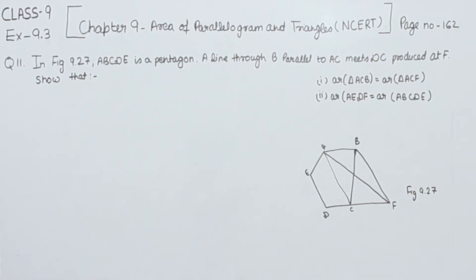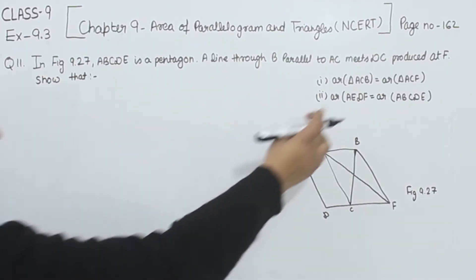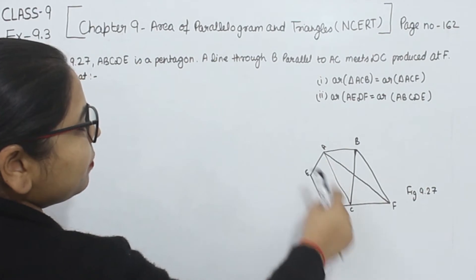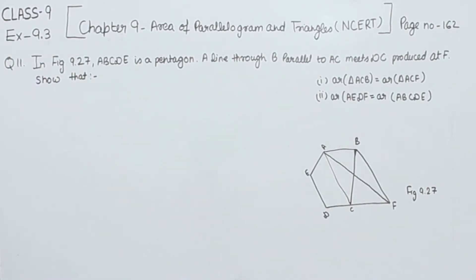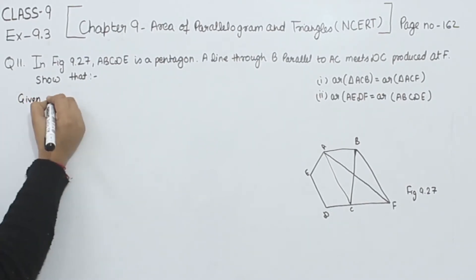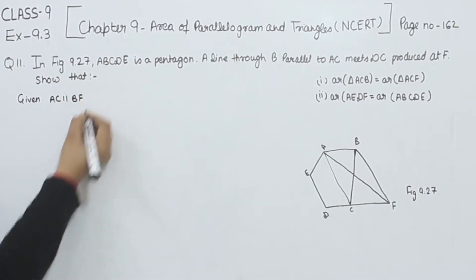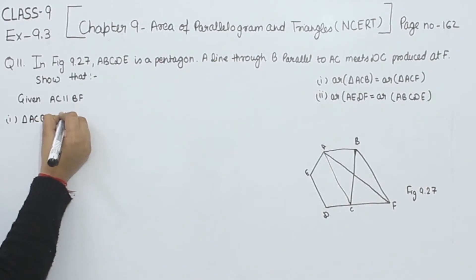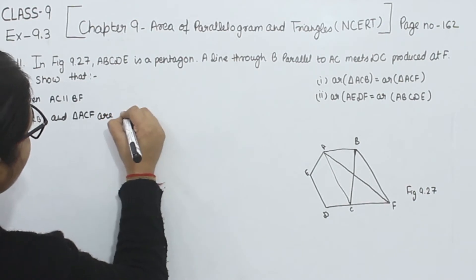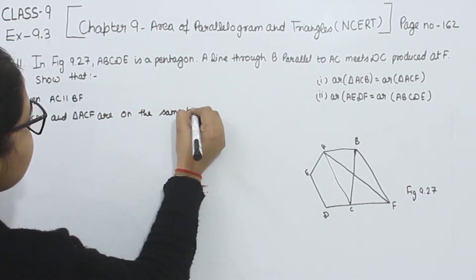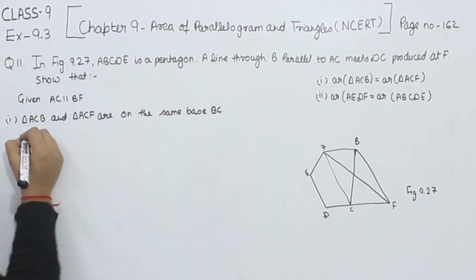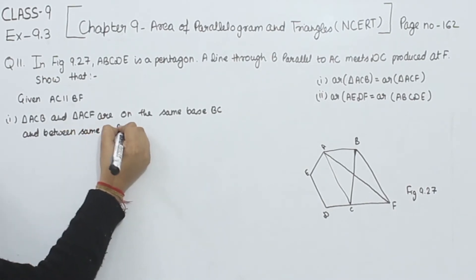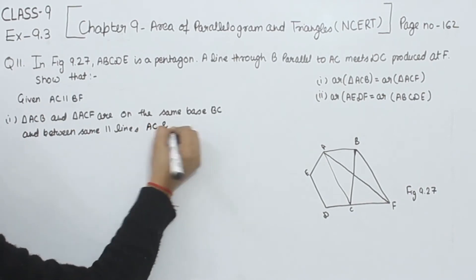We are going to start with part one. In part one, we have to prove that the area of triangle ACB is equal to the area of triangle ACF. We are given in the question that AC is parallel to BF. So we are going to take triangle ACB and triangle ACF — they are on the same base BC.